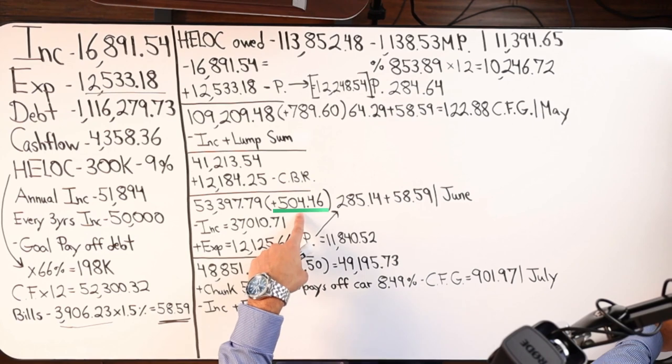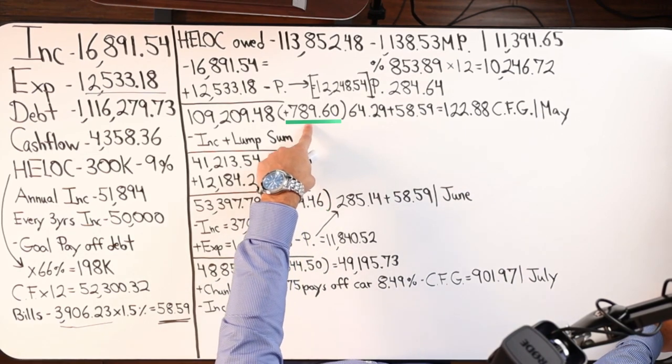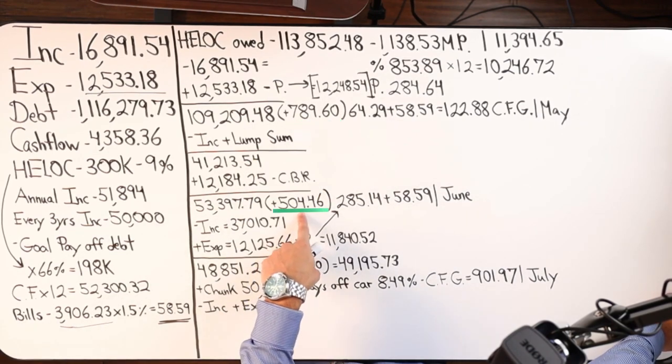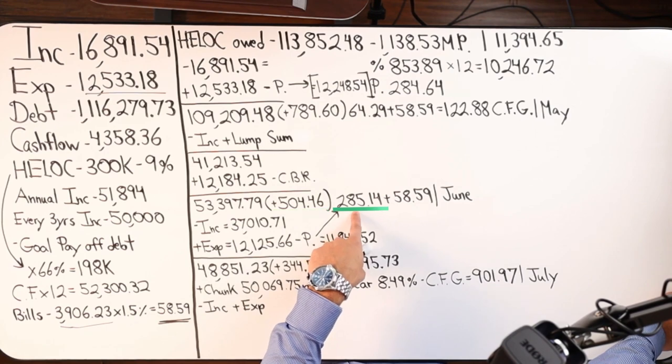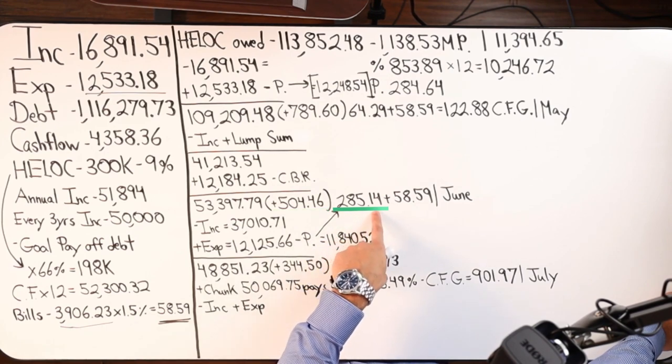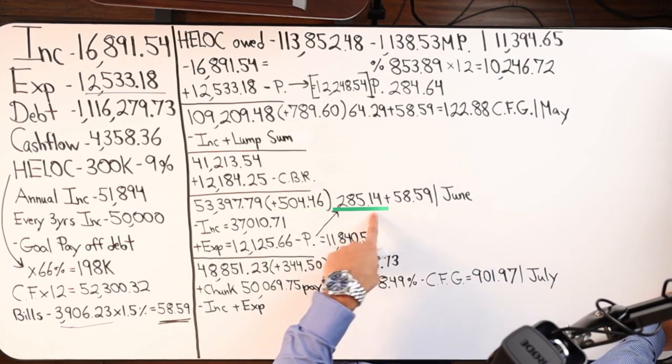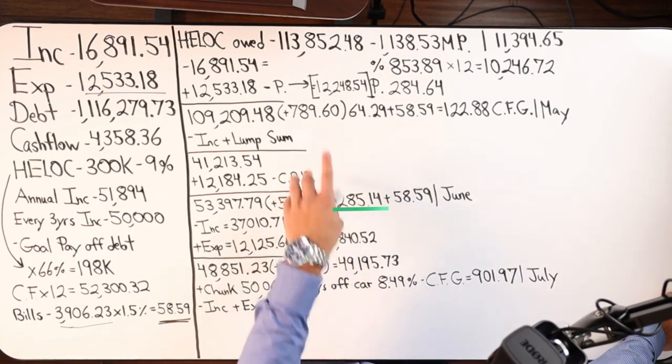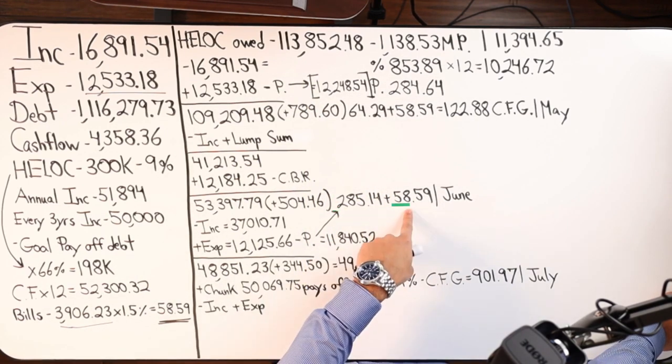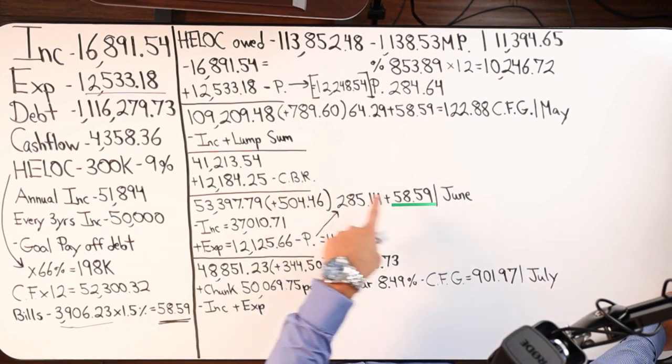Look where the interest costs dropped. So we went from 789.60 to 504.46. So that's now $285.14 additional principal paying down the balance of that tool. Add your cashback rewards, which was mentioned right here.